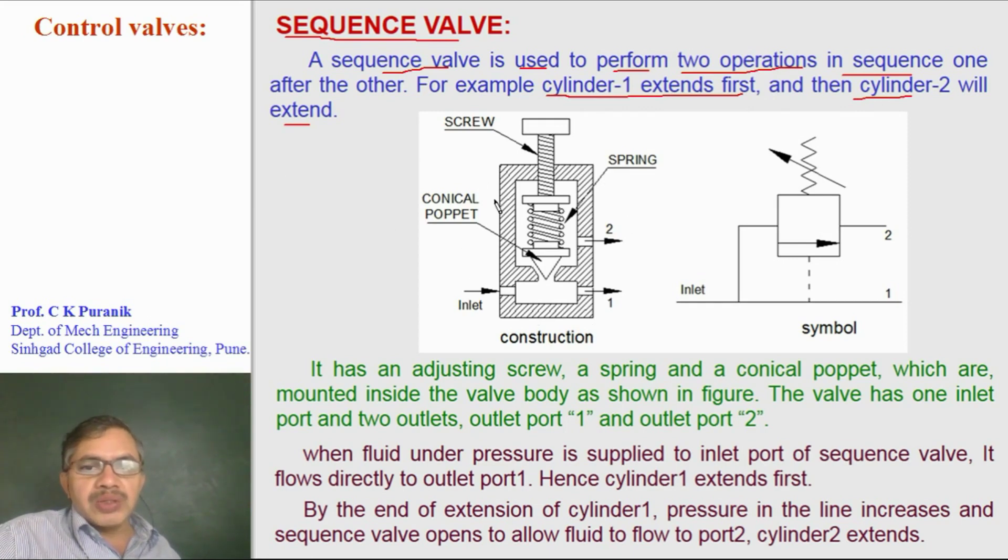Sequence valves are usually used in case of hydraulic systems. Construction is shown in this figure. It has a spring-loaded conical poppet and an adjusting screw. By turning the screw, we can adjust the pressure at which the conical poppet should lift to allow oil to flow to second port.